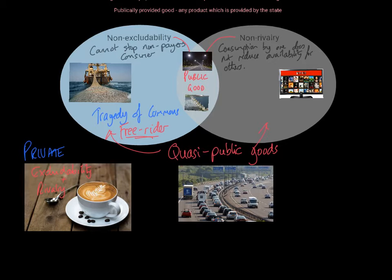All goods can be put into one of three camps: either they are private — excludable and rival; they are public — non-excludable and non-rival; or they are quasi-public — meaning they are one or the other, or they demonstrate both characteristics only up to a certain point.